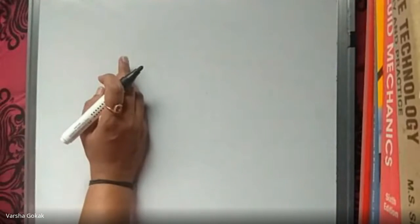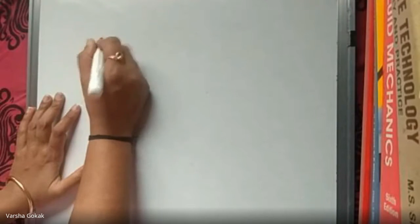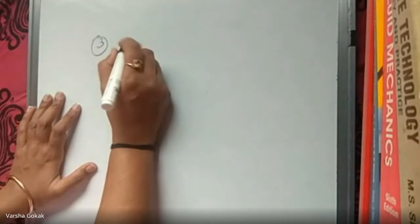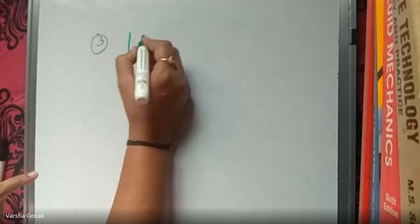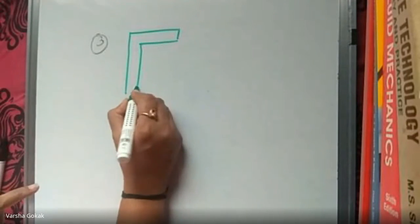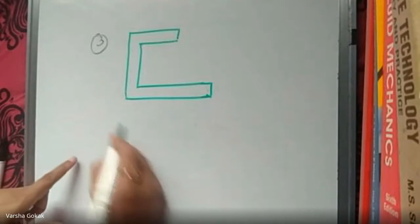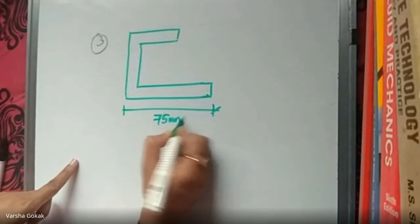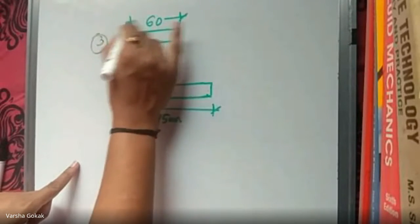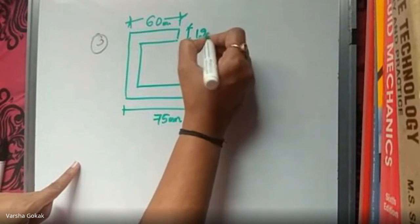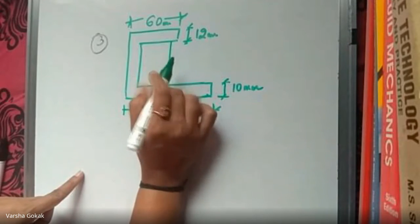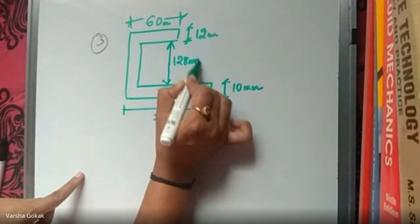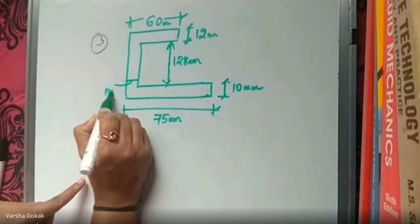Next numerical — numerical number three — is a C-section, which looks like the letter C. These are used in industrial construction as steel angles. The figure has dimensions: 75 mm, 60 mm, 12 mm thickness on the top flange, 10 mm thickness on the web, and 128 mm for the web height.